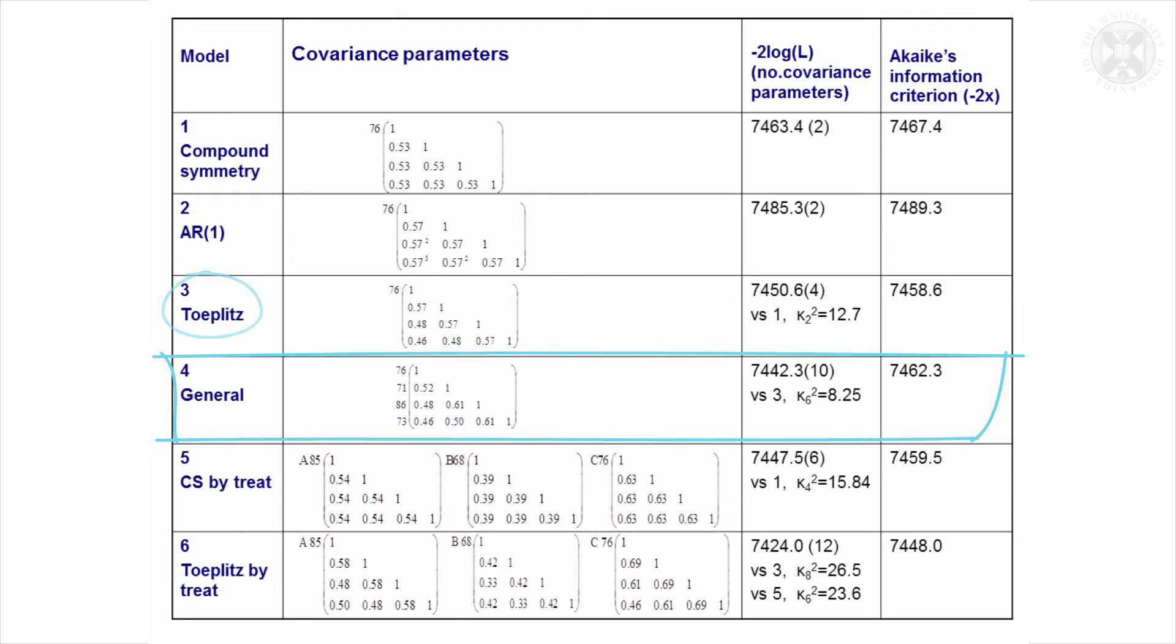That didn't quite come out to be significant because we've got six extra parameters and our chi-squared statistic of 8.25 wasn't significant. So that wasn't an improvement—we've got no need for these extra six parameters in the model.